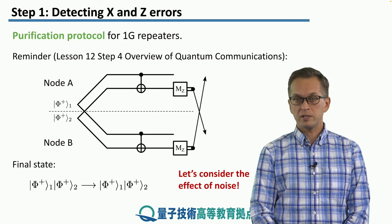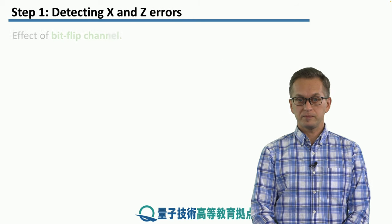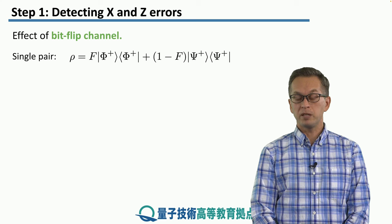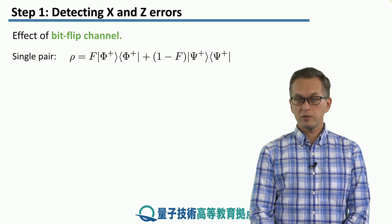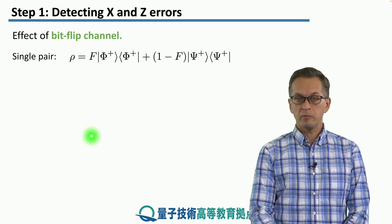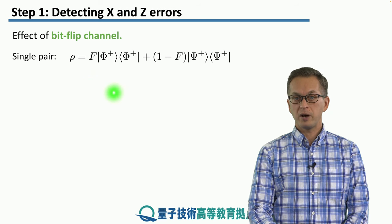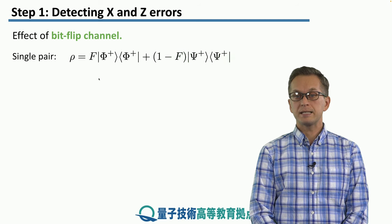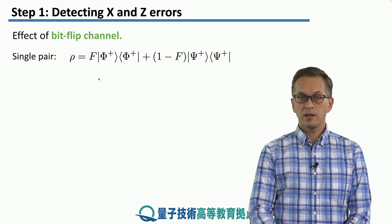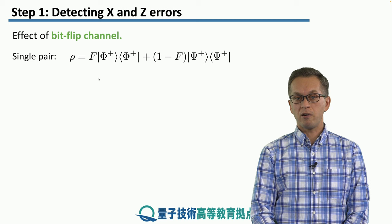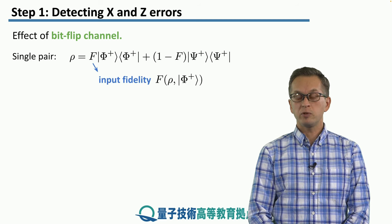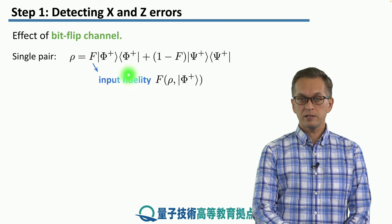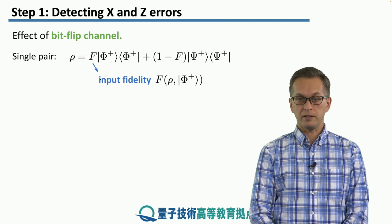But what happens if the input itself is affected by errors? To analyze that, we will consider a bit flip channel. So the two possibilities for the input are that the input is unaffected by the bit flip channel, remaining phi plus, or it flips into a psi plus state. This F in front of our ideal phi plus term is the input fidelity. So with fidelity F, we have the ideal state and 1 minus F, we've got the error affected state.